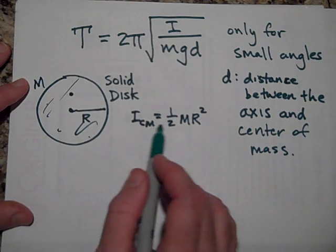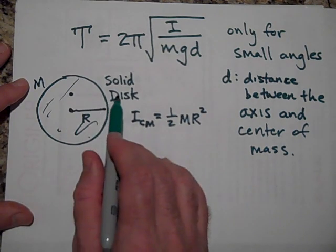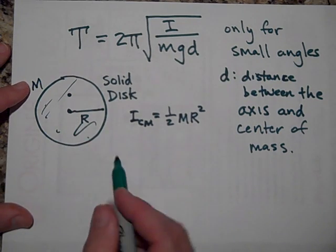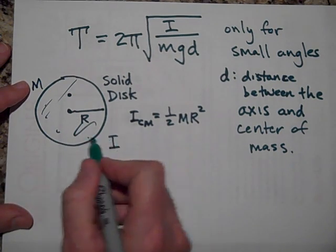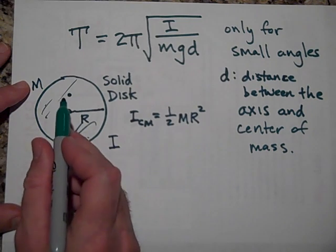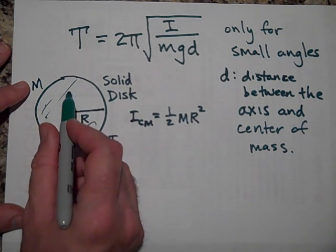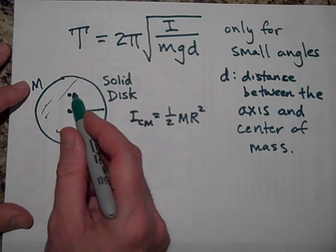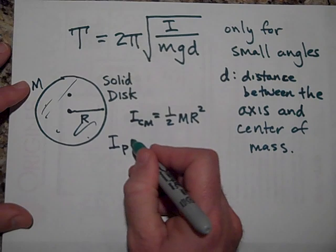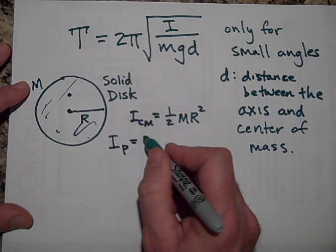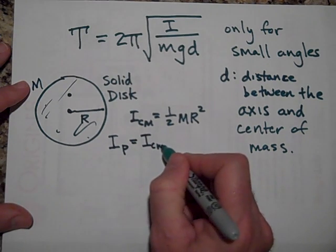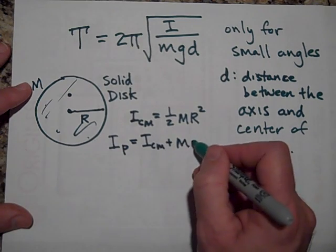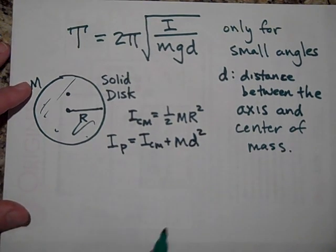But we don't want to use the I through the center of mass. We have to use the I through the point, through the axis. So let's use the parallel axis theorem. Aren't those parallel, this axis, this axis, and this axis, those are parallel. Can you imagine two lines coming out of here, being parallel? So I parallel is equal to I through the center of mass, plus just a term M, the mass of the thing, times the distance between the two axes squared.